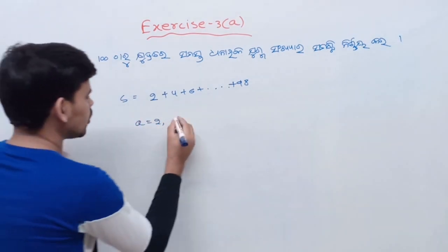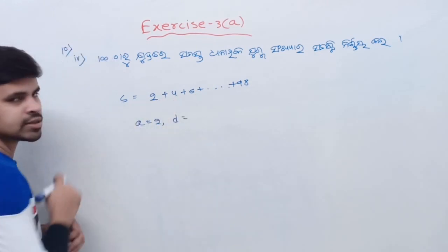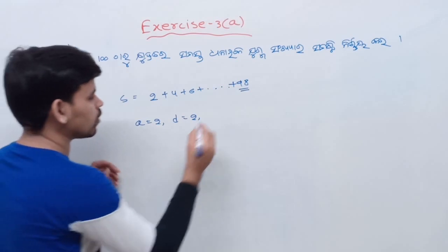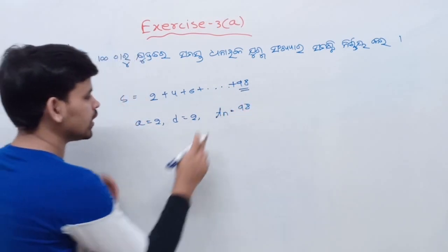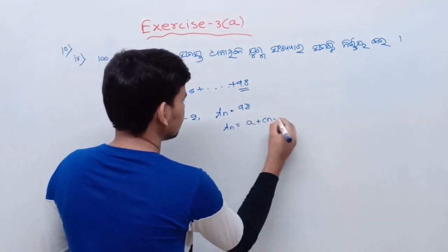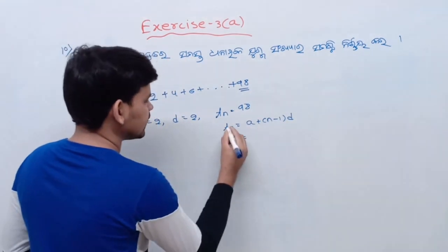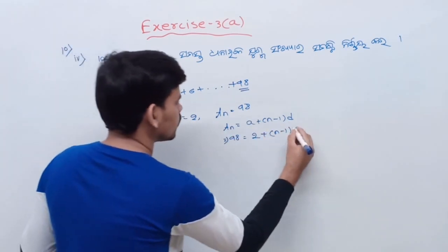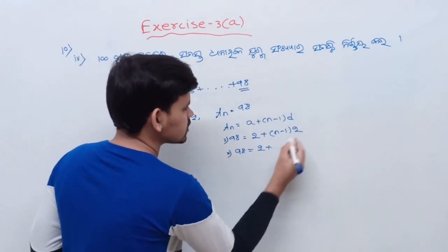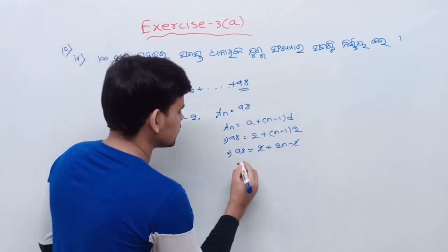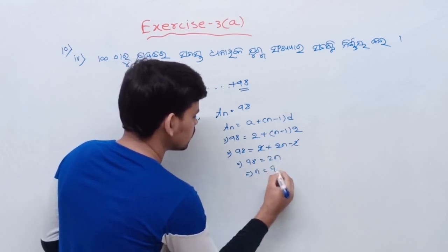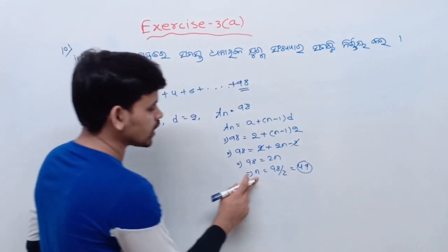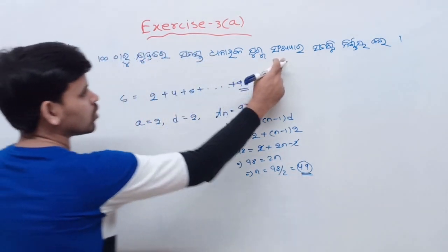The first term is 2. The second term is 4. 4 minus 2 is 2, so D is 2. TN is 98. So we have the TN formula: A plus N minus 1 into D. TN is 98, then A is 2, plus N minus 1 into D is 2, then 98 equals 2 plus N minus 1 into 2, so N equals 49. So if TN is 98, then N is equal to 49.